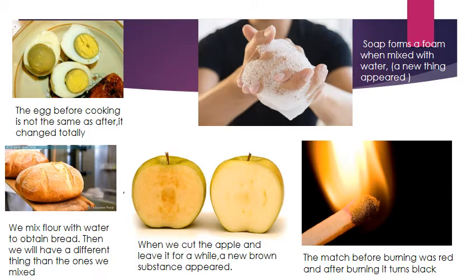The match before burning it has a red color. After burning it, it becomes brown. This change leads to the formation of a new substance. Then we can say that we have a chemical change.